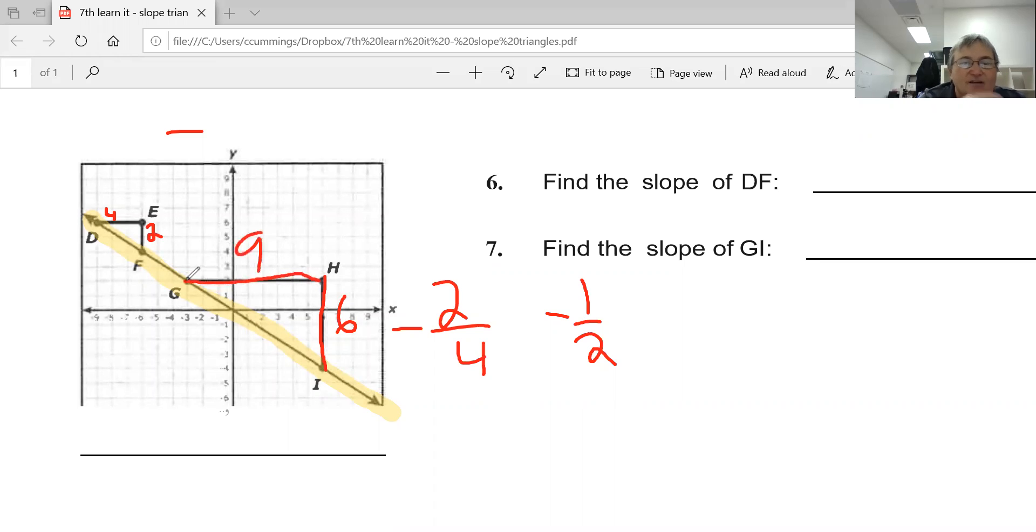9. So I now have to figure out what I did wrong because 6 over 9 is not negative 1 half. So let's see... Oh, oh, I miscounted, so I know that I miscounted. So we come up here and then that is 3, and then that's negative 6 over 9, which is negative 2 thirds. And let me fix this one.